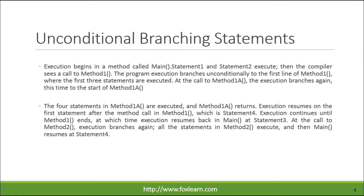Execution begins in a method called main. Statement1 and statement2 execute, then the compiler sees a call to method1. The program execution branches unconditionally to the first line of method1, where the first three statements are executed. At the call to method1a, the execution branches again, this time to the start of method1a. The four statements in method1a are executed, and method1a returns. Execution resumes on the first statement after the method call in method1, which is statement4.